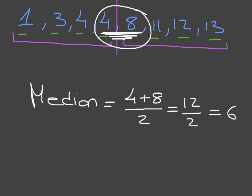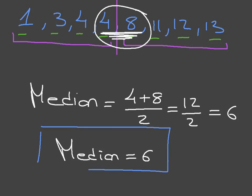And finally, below this, we can state that the median is equal to 6. And there we have it. We've just shown how to calculate the median of a list of numbers when there's an odd number of values as well as when there's an even number of values.